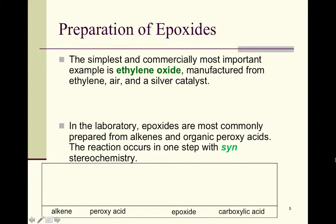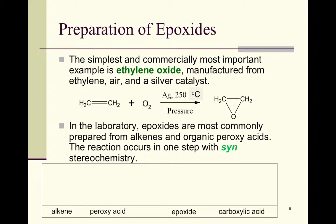The simplest and commercially most important example of epoxide synthesis is ethylene oxide, manufactured from ethylene, air, and a silver catalyst at 250 degrees and under pressure. Our carbon-carbon double bond reacts with oxygen under those conditions to give ethylene oxide.